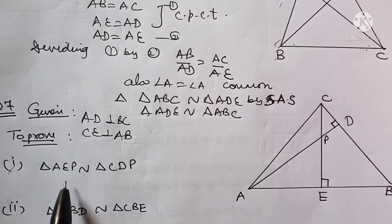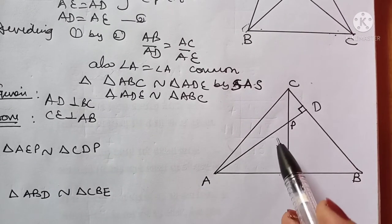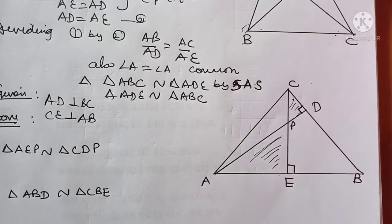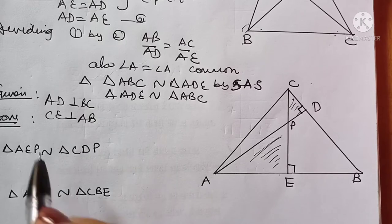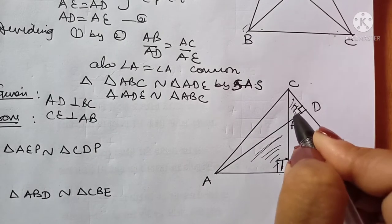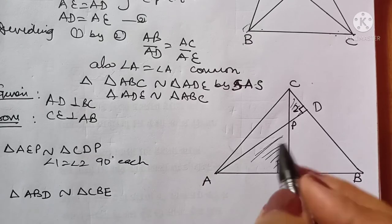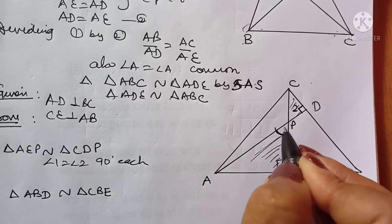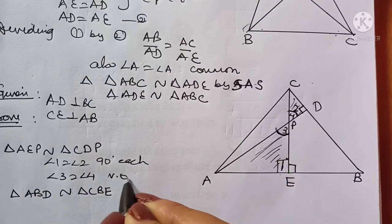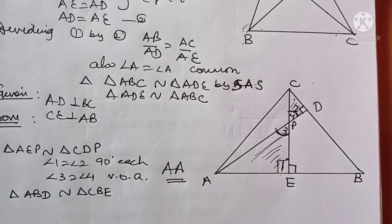First part: triangle AEP is similar to triangle CDP. In triangle AEP, angle 1 is 90°, and in triangle CDP, angle 2 is 90°. So angle 1 is equal to angle 2 — both are 90°. Also, angle 3 is equal to angle 4 as vertically opposite angles. So by AA rule, triangles AEP and CDP are similar.